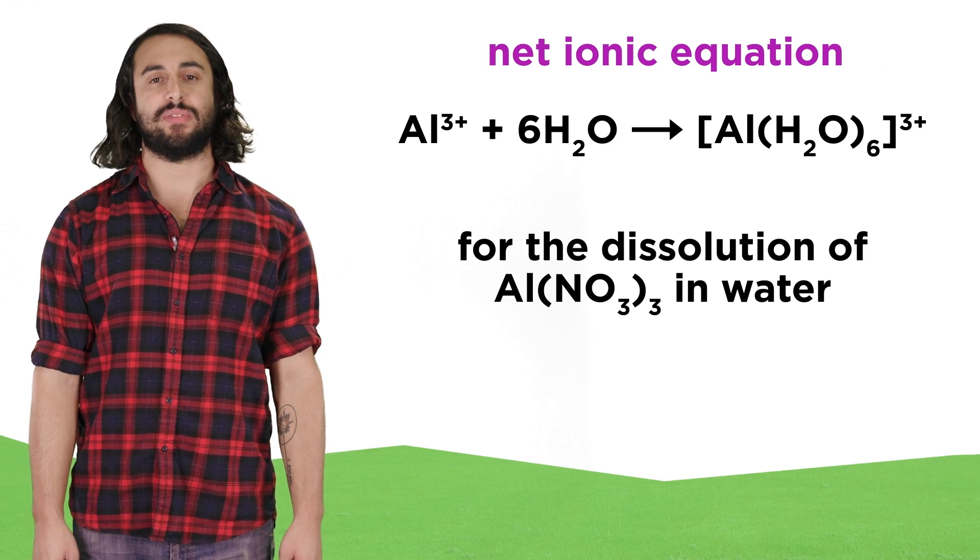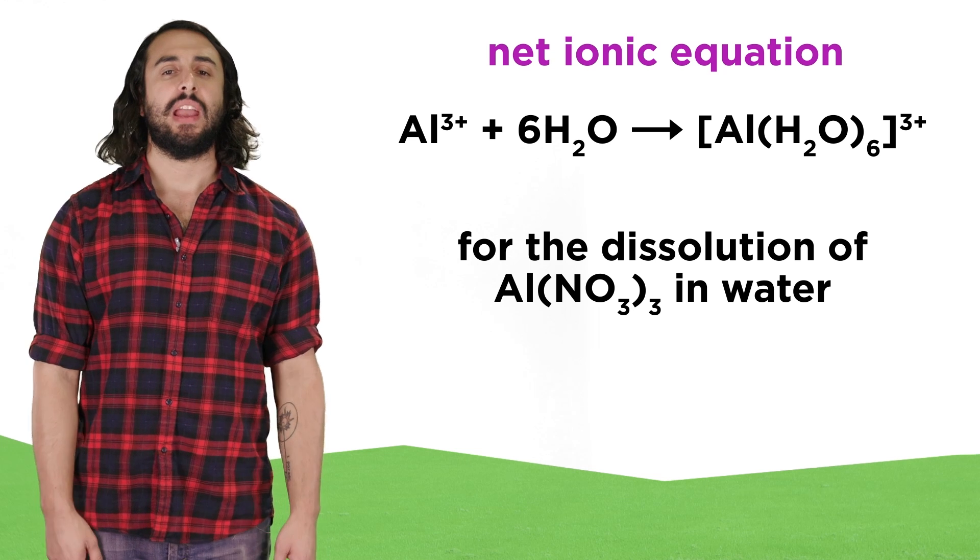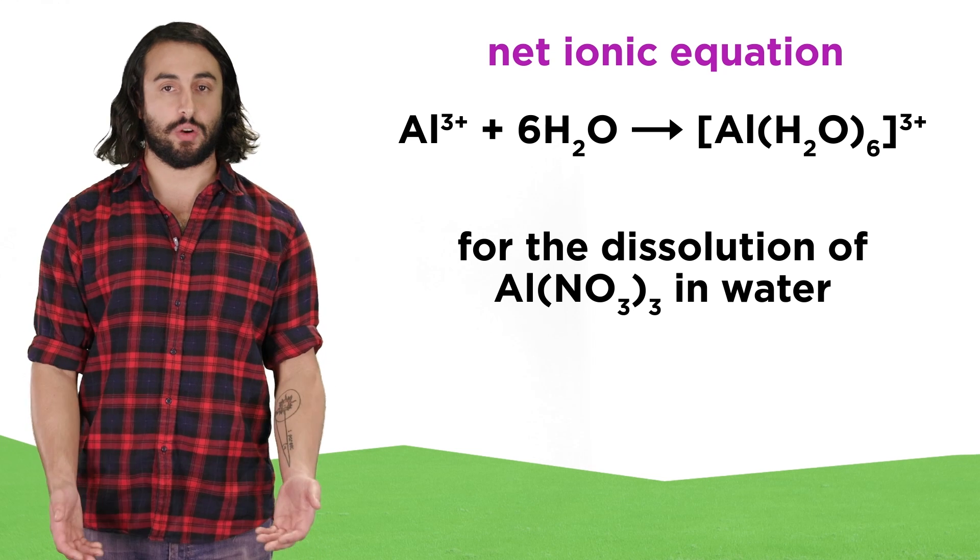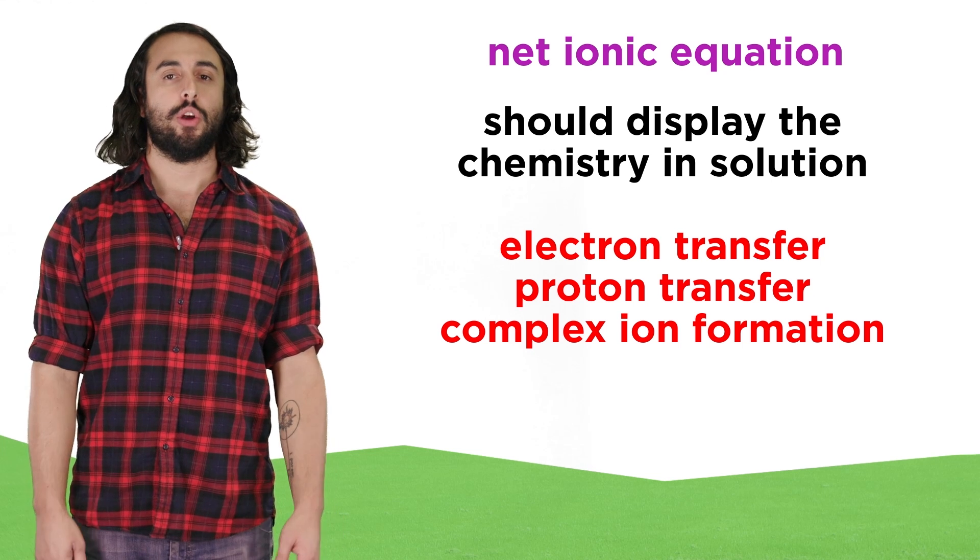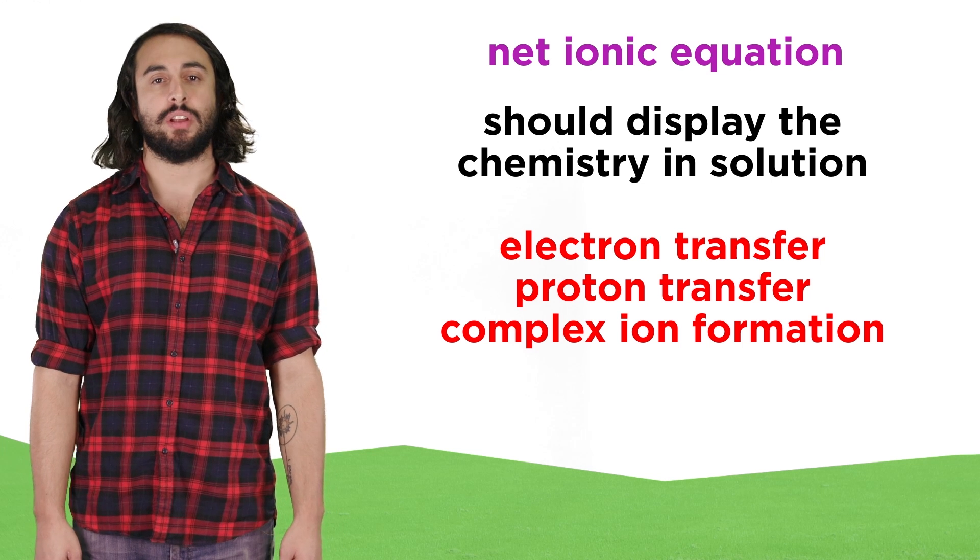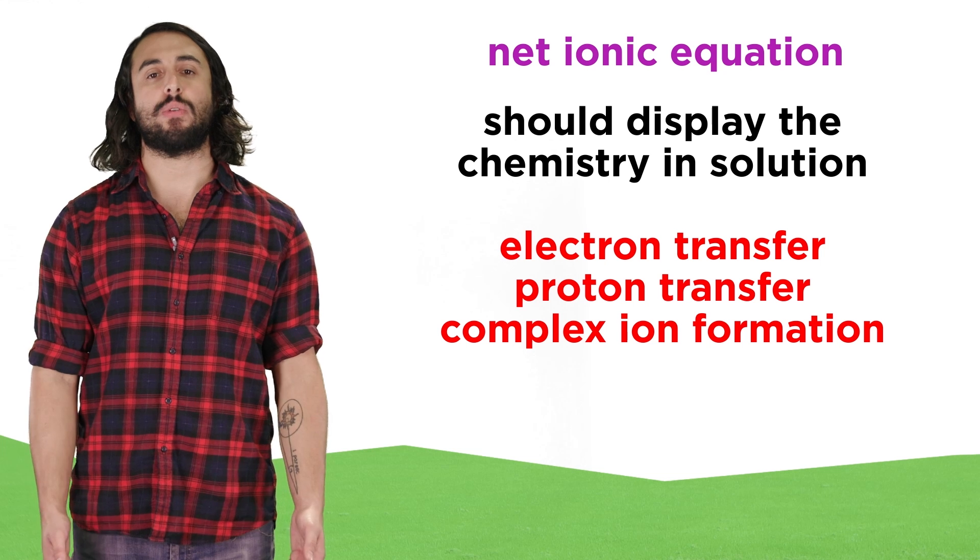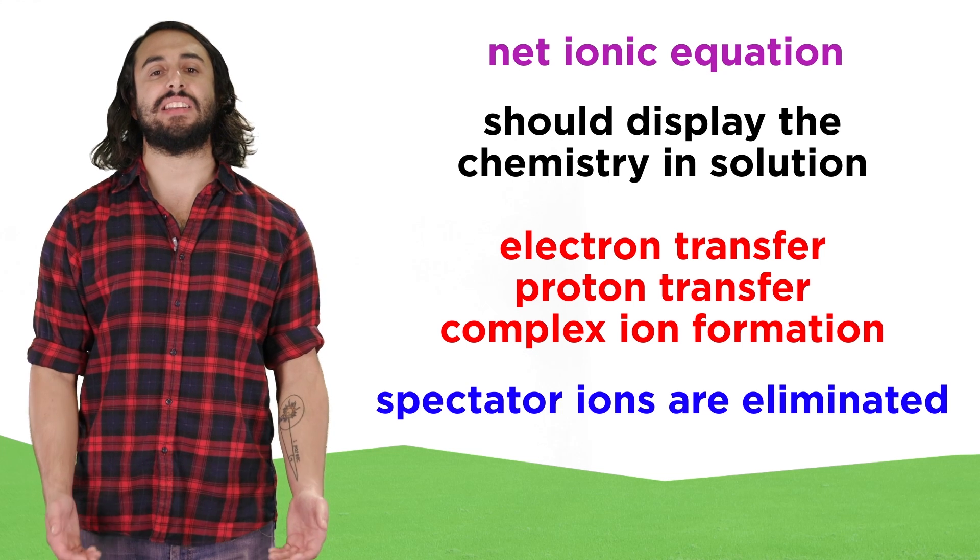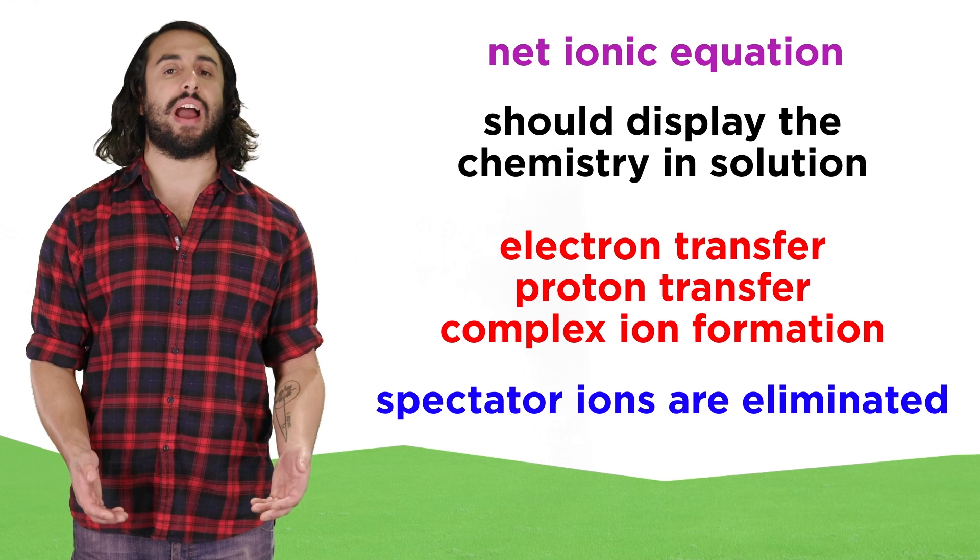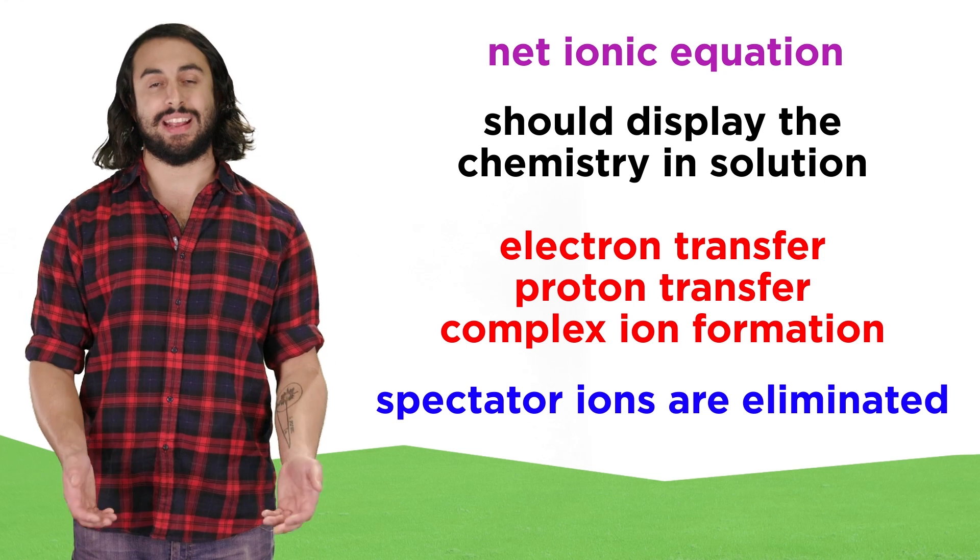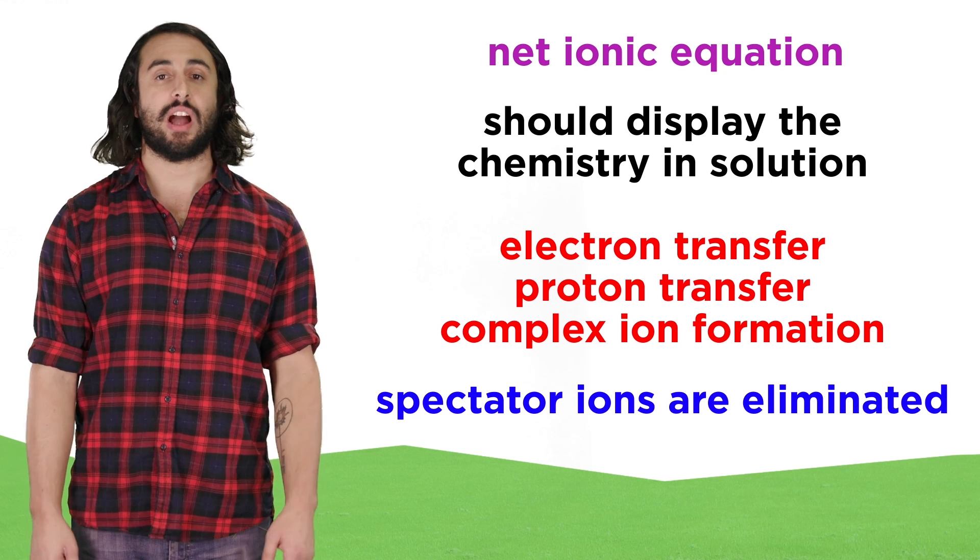Just as with other types of equations we have tried to balance, it is important to see what chemistry is really occurring, whether it is electron transfer, proton transfer, or complex ion formation, and be able to take an overall equation and cancel out any spectator ions to give a net ionic equation that exclusively describes the chemistry that is going on in solution. Let's check comprehension.